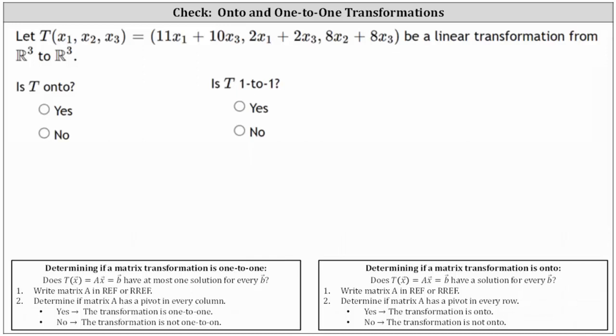We need to begin by writing the equation in the form of T of vector x equals matrix A times vector x. Once we determine matrix A, we can write matrix A in row echelon form or reduced row echelon form and determine the pivots. If there are pivots in every column, the transformation is one-to-one. If there are pivots in every row, the transformation is onto.